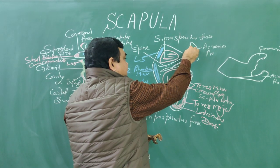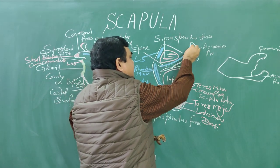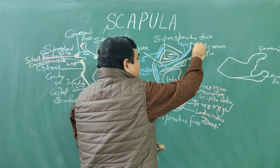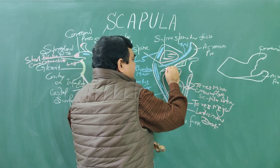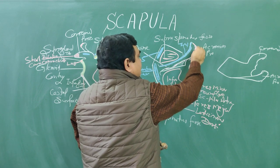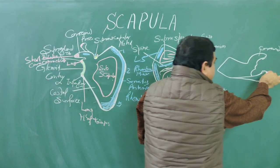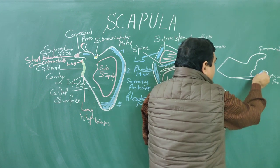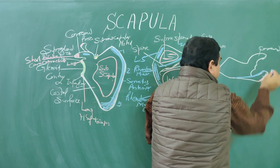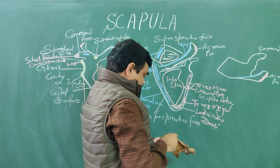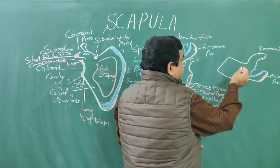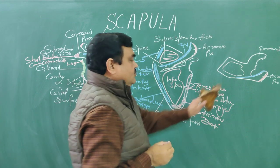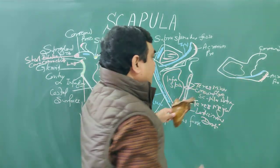This muscle is trapezius. And here is deltoid. This muscle is deltoid. Trapezius and deltoid are attached here. Here is the superior attachment of the trapezius muscle.